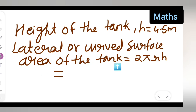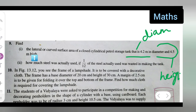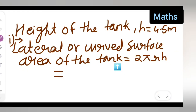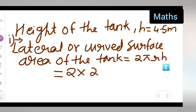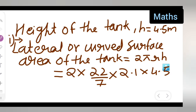Now we need to find the lateral or curved surface area of the tank — this is the first part. The formula for lateral surface area is 2πrh. Substituting: 2 multiplied by 22/7, multiplied by radius 2.1, multiplied by height 4.5.